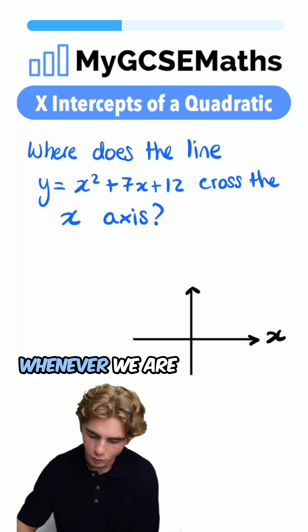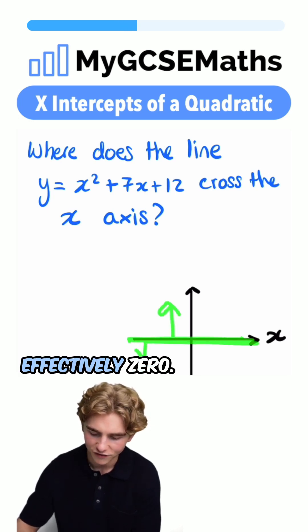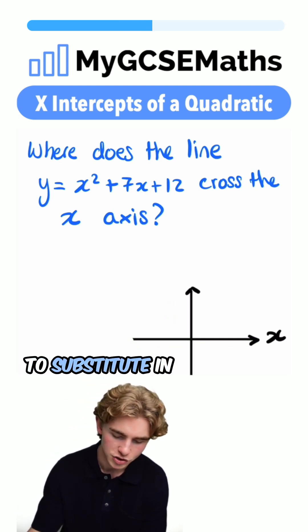Why is that? Because whenever we are on the x-axis, the height of the line is effectively 0. The value of y is equal to 0, so we're going to substitute in y equals 0.